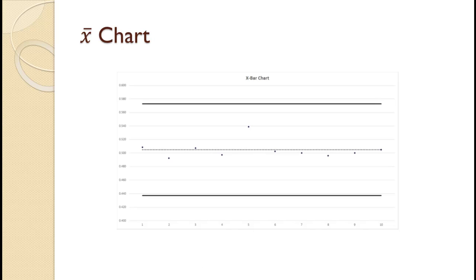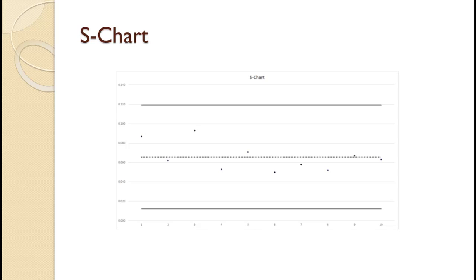The slide shows the resulting X-bar chart. It uses the control limits we computed earlier. The data points correspond to the sample means shown earlier. Note that the process appears completely in control with no points near either control limit. The slide shows the resulting S chart. As with the X-bar chart, everything appears to be within control.